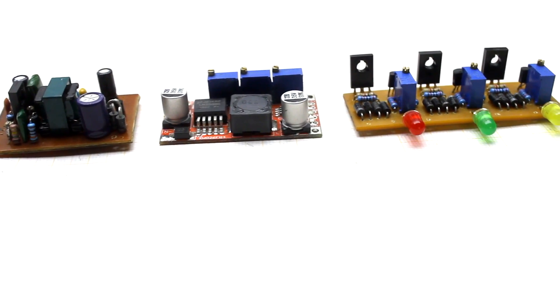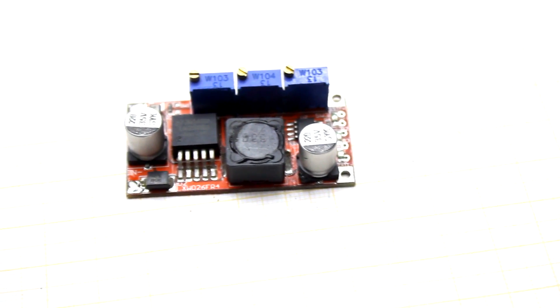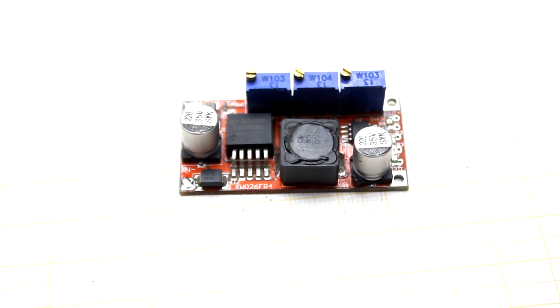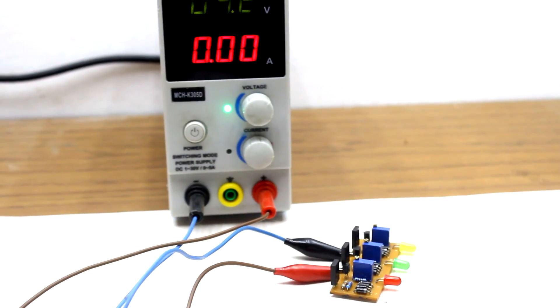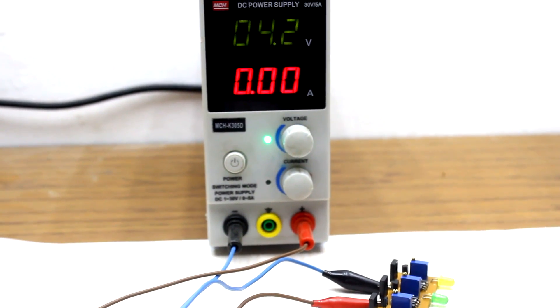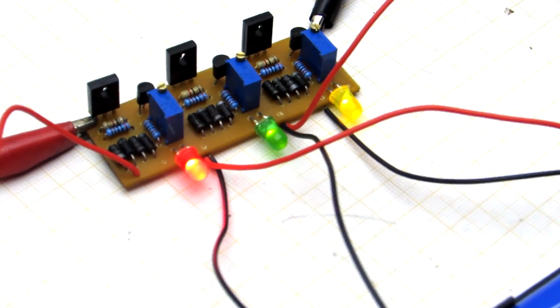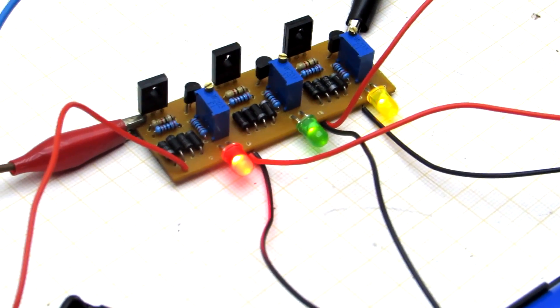The ideal charger for lithium ion batteries should have a stabilizing unit for voltage and current, and also a voltage balancing system for banks. The voltage of the fully charged can of lithium ion battery is 4.2 volts. As soon as the bank has reached this voltage, the charging process should stop.